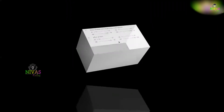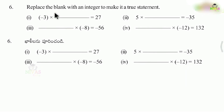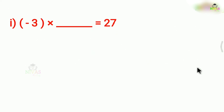The sixth question: replace the blank with an integer to make a true statement. The first problem is: blank into minus 3 into minus 2 equals 27. The number is the product of two numbers.